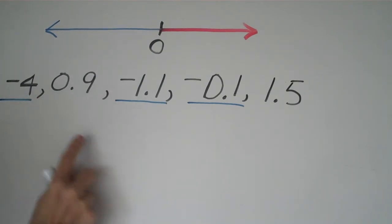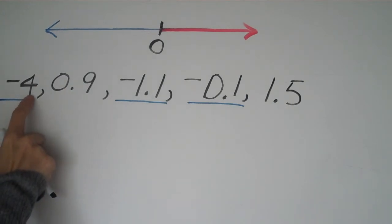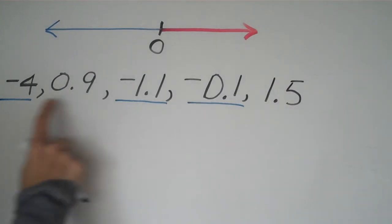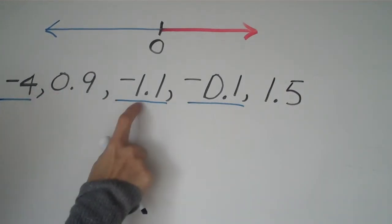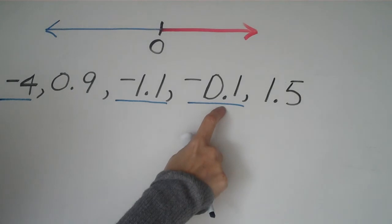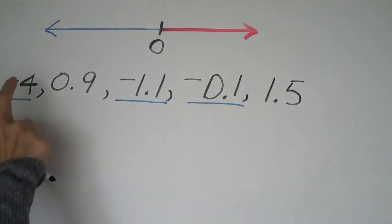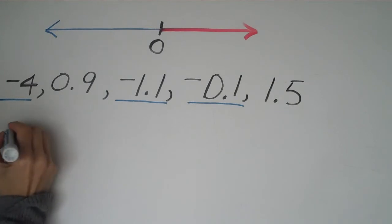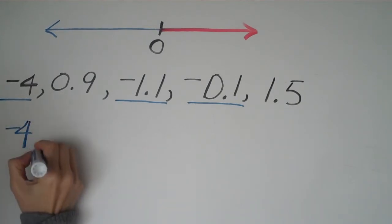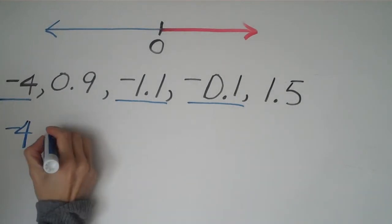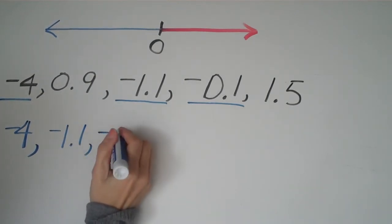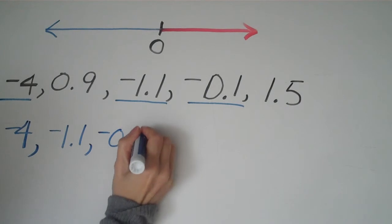With negative numbers, the one that looks the biggest is actually the smallest. Think about money: if I had four dollars, or a dollar ten, or only ten cents — if it looks the biggest and it's negative, it's actually the smallest. So we list negative 4 first, then negative 1.1, then negative 0.1.